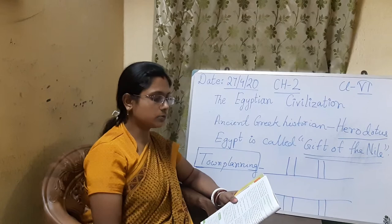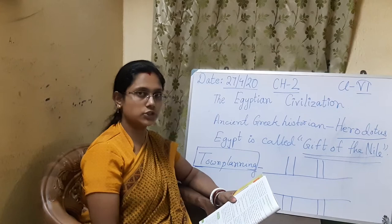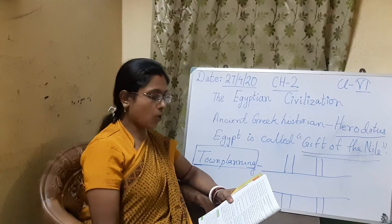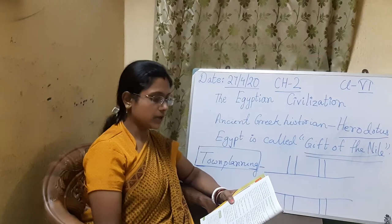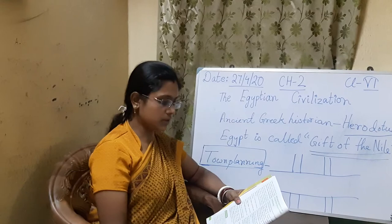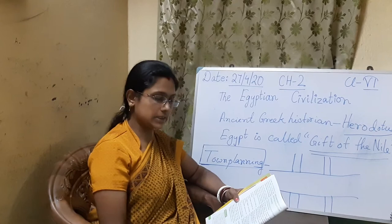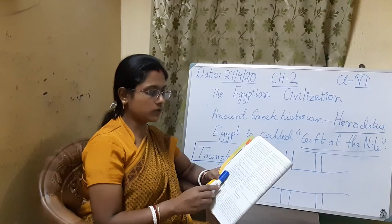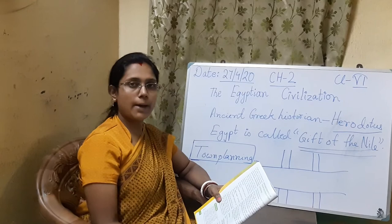Archaeological excavations, inscriptions, and official documents have helped historians reconstruct the history of ancient Egypt. The history of ancient Egypt is divided into three periods: the Old Kingdom (approximately 3,000 to 2,000 BC), the Middle Kingdom (approximately 2,000 to 1,700 BC), and the New Kingdom (approximately 1,600 to 1,100 BC). For about 100 years, from 1,700 to 1,600 BC, Egypt was invaded and ruled by the Hyksos tribes.